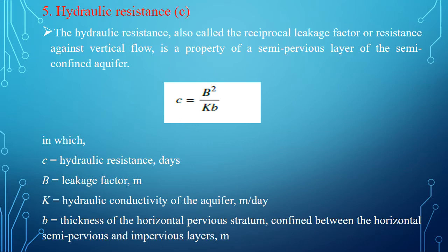The hydraulic resistance can be represented by the formula C equals B squared upon KB, where C is the hydraulic resistance in days, B is the leakage factor, K is the hydraulic conductivity of the aquifer, and B is the thickness of the horizontal pervious stratum confined between horizontal semi-pervious and impervious layers.